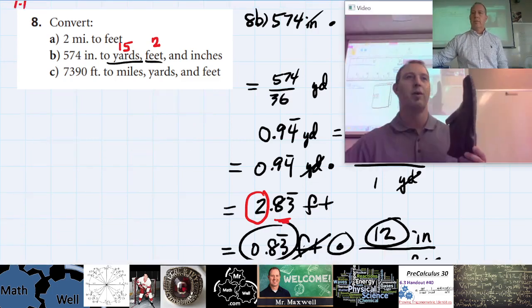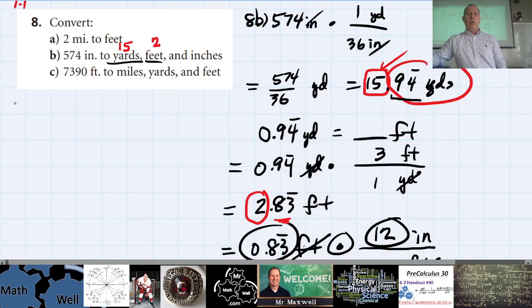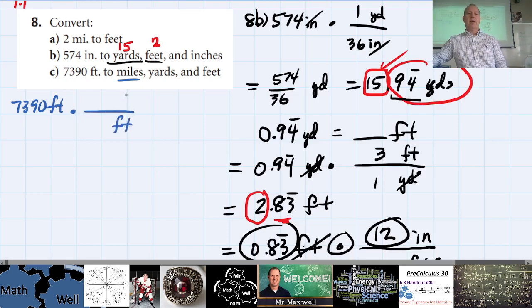Alright, 8c. I'm going to use unit analysis and convert to miles first — it'll probably be a decimal. Starting with 7,390 feet, I'll multiply by a conversion factor with feet on the bottom. I know the relationship between miles and feet: 1 mile is 5,280 feet.